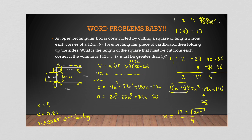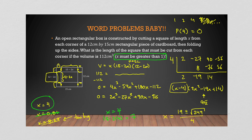x ≈ 8.69 is too big — it gives zero width, so we reject it. The question also states x must be greater than 1, so we reject x ≈ 0.81 as well. That leaves x = 4 as our only solution. The height is 4. Length = 15 − 2(4) = 7. Width = 12 − 2(4) = 4.